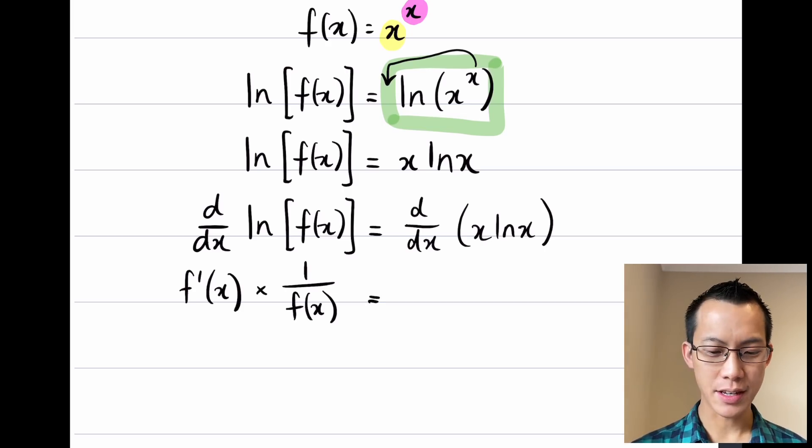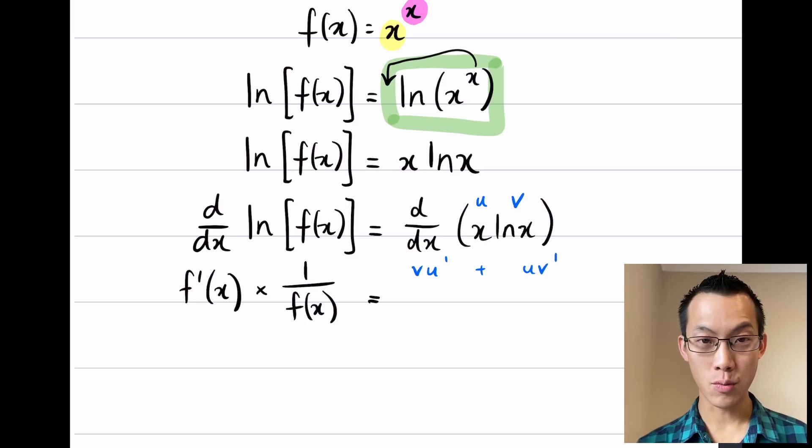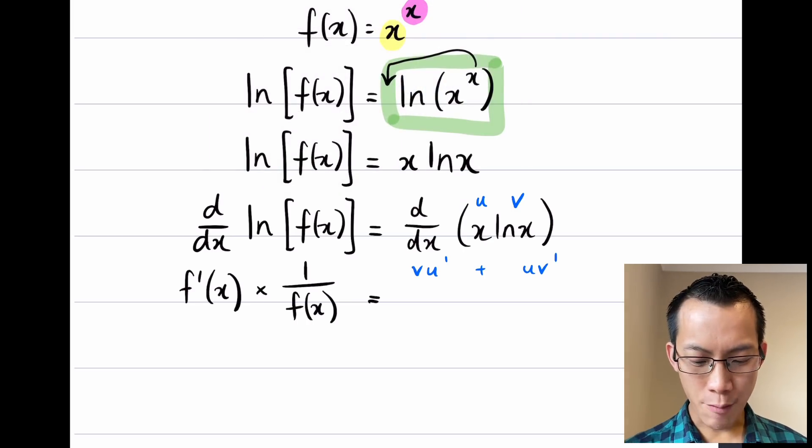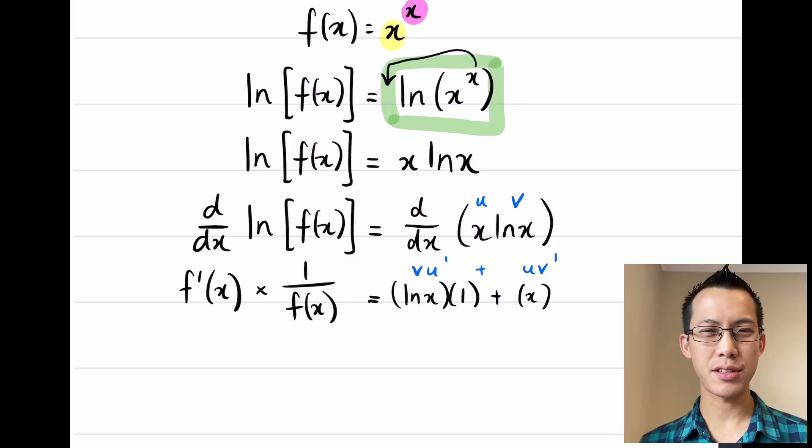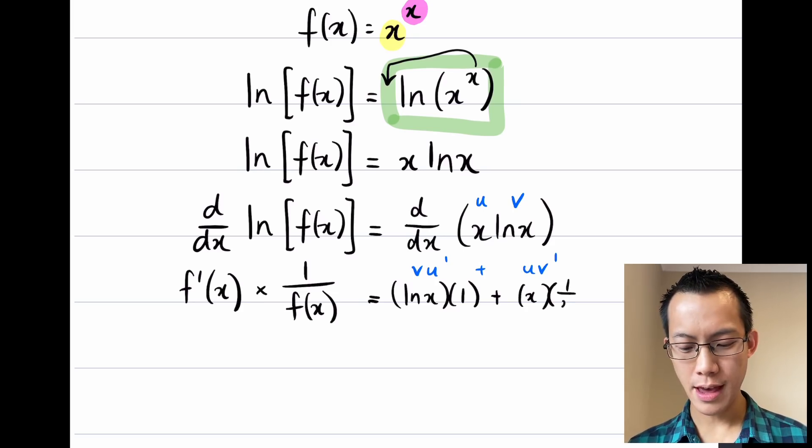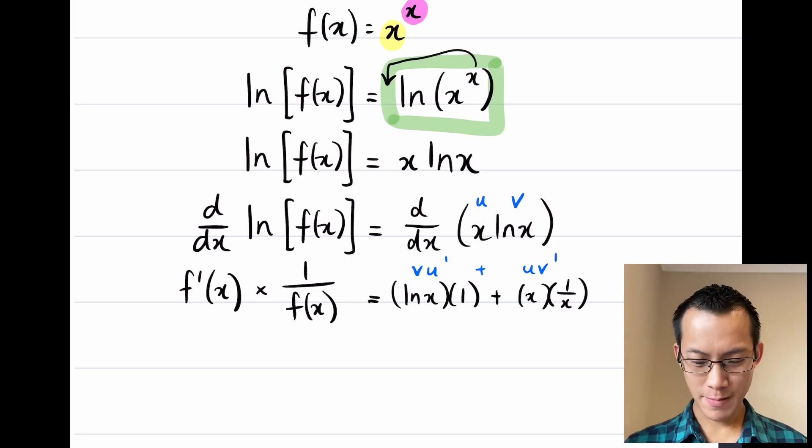Now I want to have a look at the right hand side. I've got a product, let's call this u and v. I'm going to write my derivative as v u' plus u v', so let's do it one step at a time. v is log x, u' is just 1. Then u is x and v', the derivative of log x, is 1 over x. I've differentiated the left hand side and the right hand side.